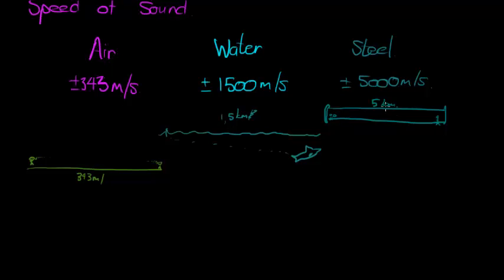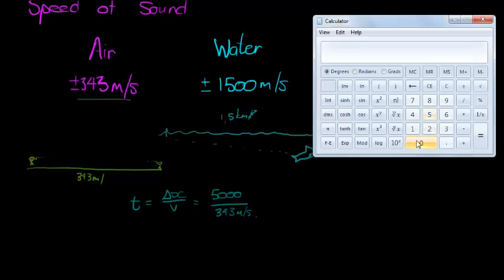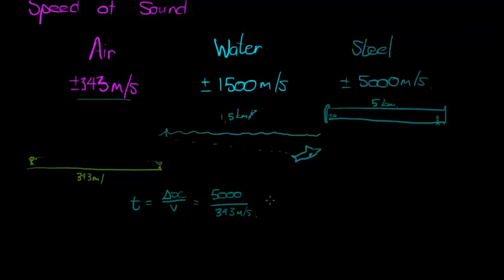For comparison, how long would it take sound to travel that same 5,000 meters through air? Time equals displacement divided by velocity: 5,000 meters divided by 343 meters per second equals approximately 14.5 seconds. So it would take 14.5 seconds for normal sound in air to cover the same distance that sound through steel covers in one second. That's incredible.